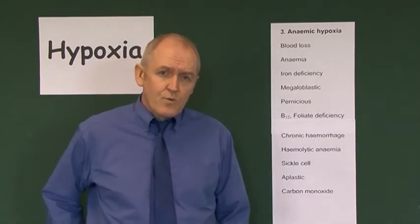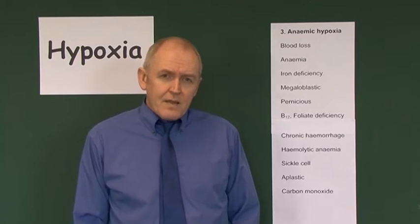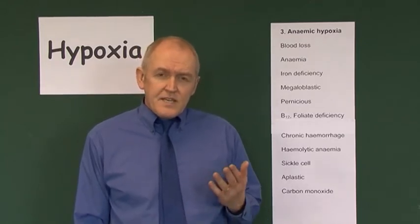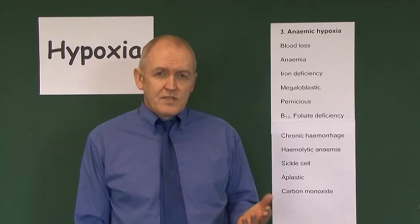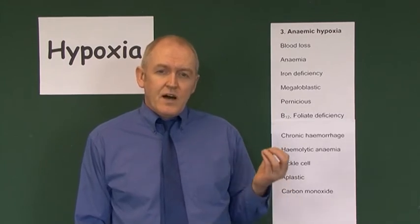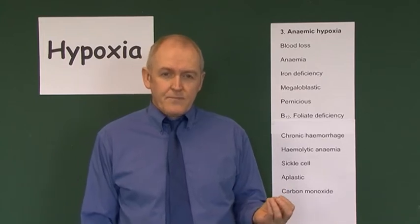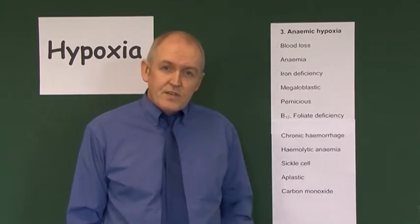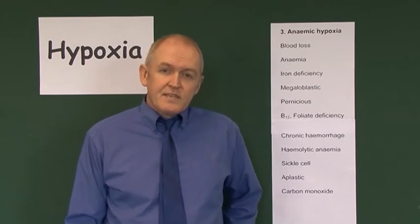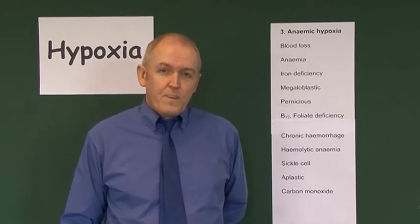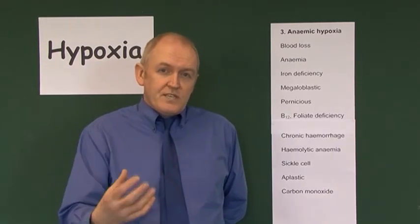Megaloblastic anemia is anemia where there are large red blood cells. These large red blood cells are immature and don't carry oxygen properly. For example, this can occur in pernicious anemia, where there is a lack of vitamin B12.